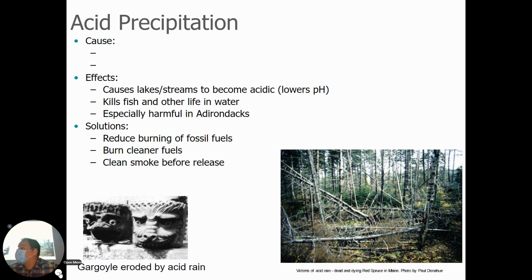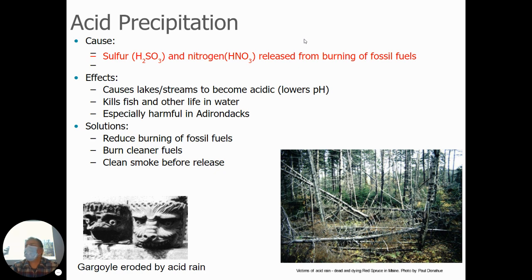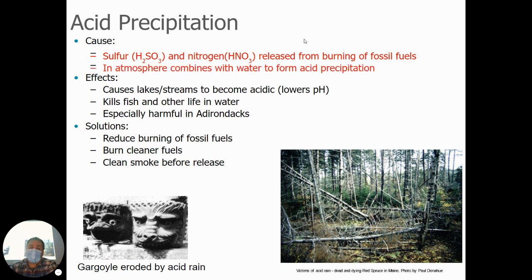Acid rain, or acid precipitation — which can be snow too — is caused by two chemicals really: sulfur and nitrogen. Fossil fuels contain sulfur and nitrogen; coal especially has high amounts of sulfur, and gasoline has high levels of nitrogen. When we drive cars or when factories or power plants burn coal, sulfur and nitrogen get into the atmosphere in the emissions, combine with water, and form sulfuric acid or nitric acid, and that acid falls to earth when it rains or snows.